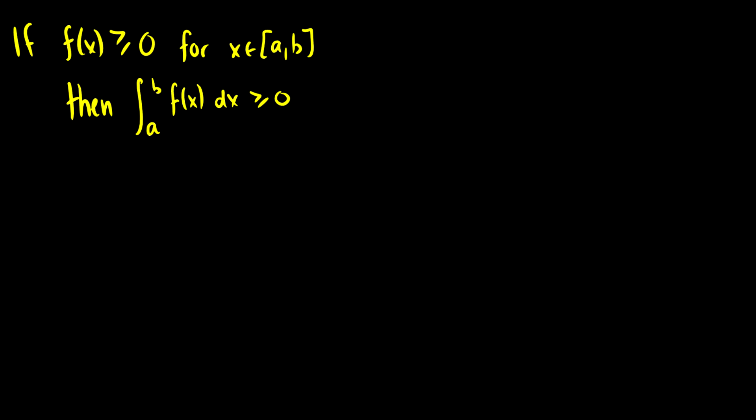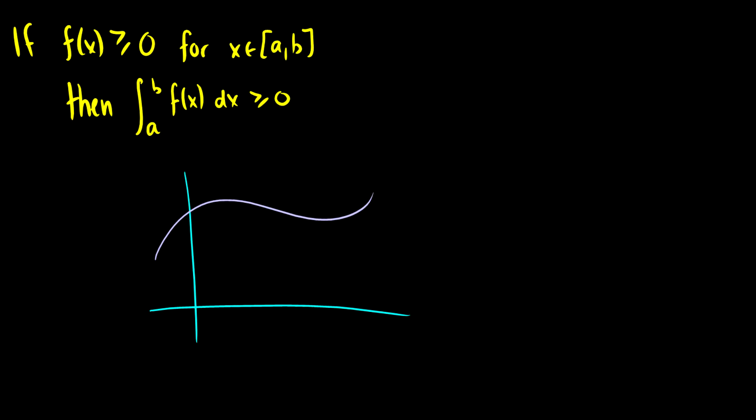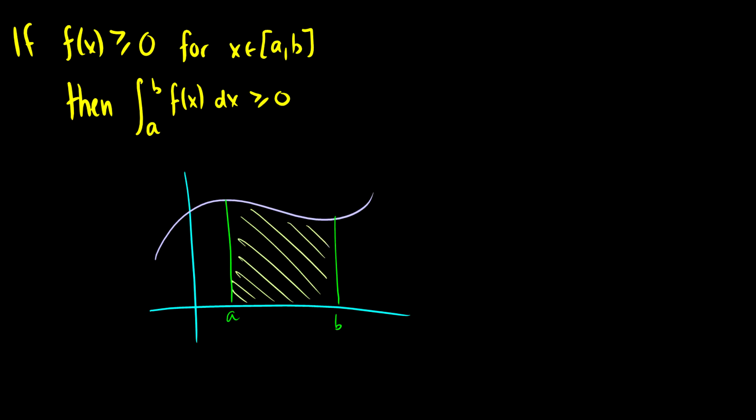Today we'll finally finish some properties of the integral. We'll start with something already introduced: if f(x) is greater than or equal to zero for all x in an interval, then the integral is going to have a result greater than zero. Graphically, if we have a curve that is positive from a to b, that just means the area here is going to be positive.